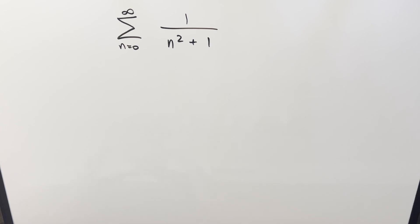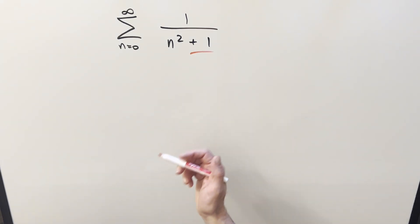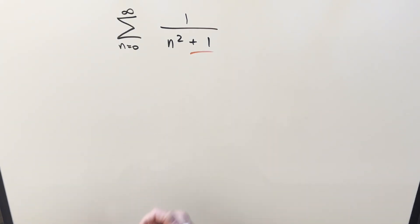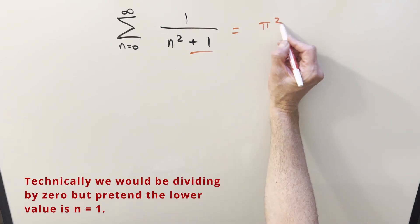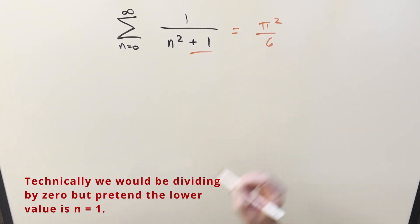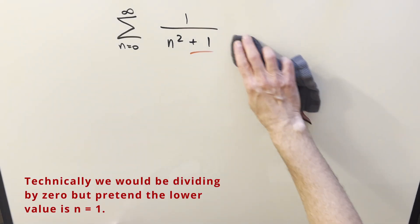We have here the sum from n equals 0 to infinity of 1 over n squared plus 1. The interesting thing is just the plus 1. If we could have just 1 over n squared, that would be π² over 6. But we do have the plus 1, so we can't just do that.